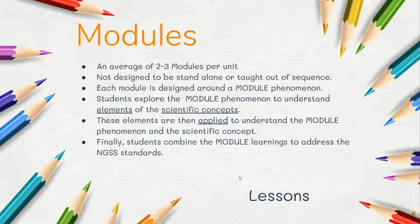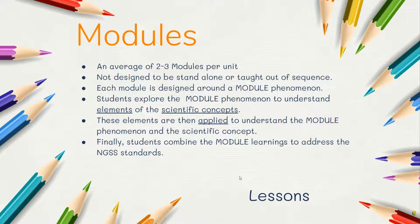Modules make up the units. There are an average of two to three modules per unit. The modules are not designed to be stand-alone components nor are they to be taught out of sequence. Each module is designed around a module phenomenon. Students explore the module phenomenon to understand elements of specific scientific concepts. These elements are then applied to understand the module phenomenon, answer an essential question, and develop scientific concepts. Finally, students combine the module learnings to address the NGSS standards, building smaller components that they then combine together to answer questions about the phenomenon.